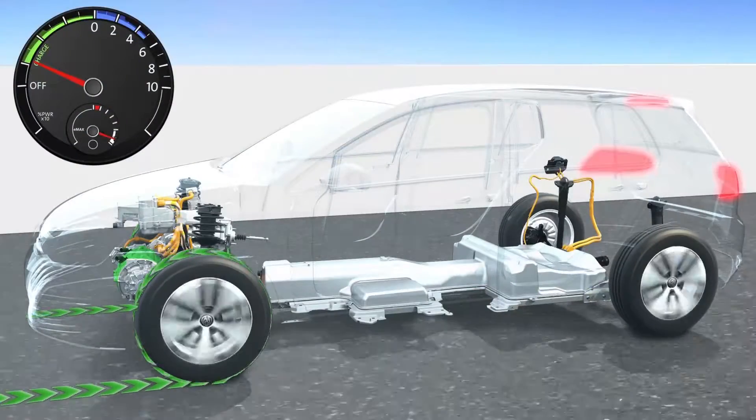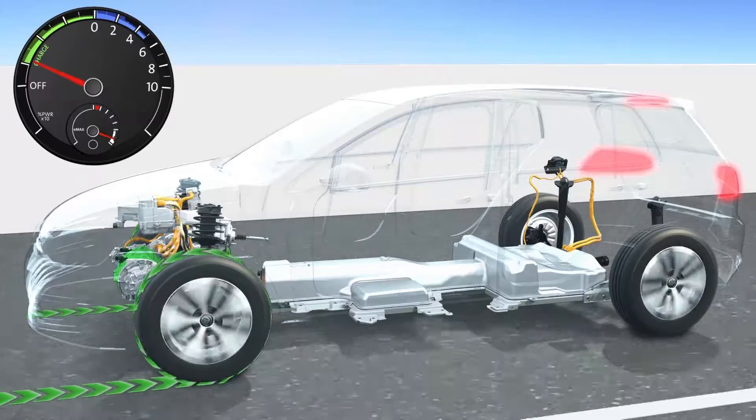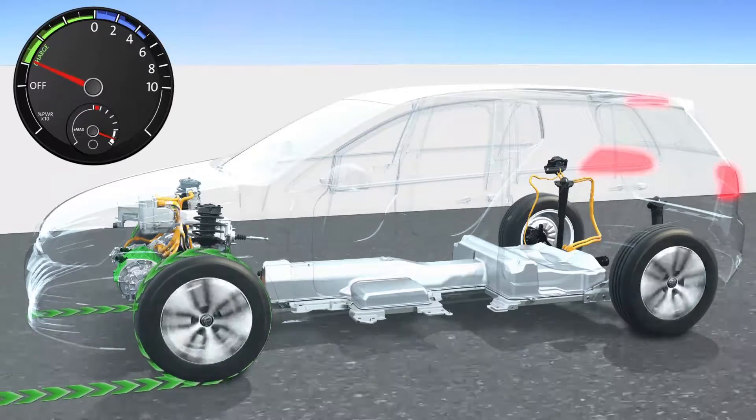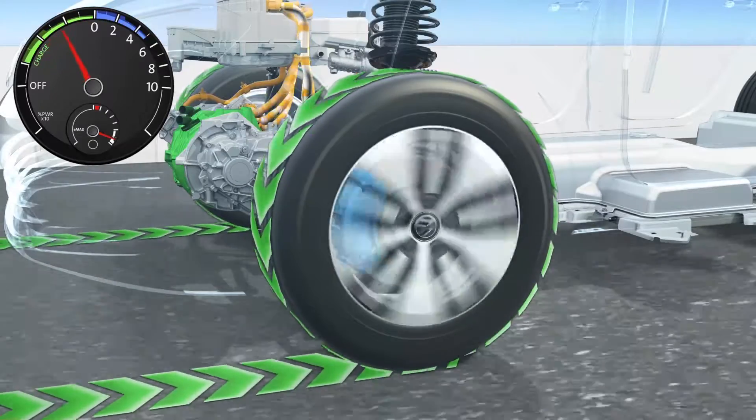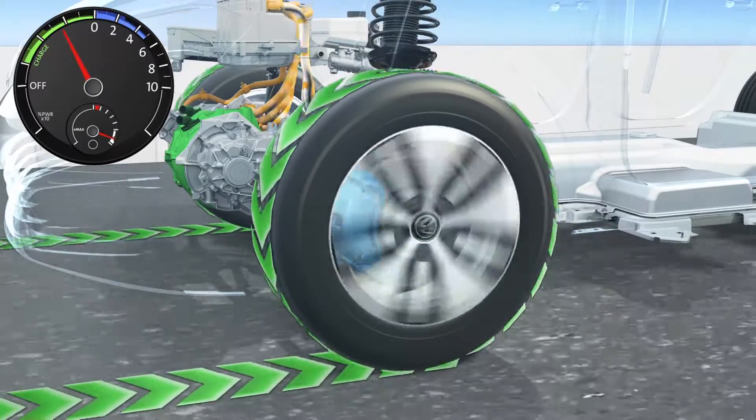The harder the driver brakes, the greater the amount of electricity that flows into the battery, though only up to a certain degree. Then the electric motor cannot brake with any additional power, and only then does the normal vehicle brake support braking.